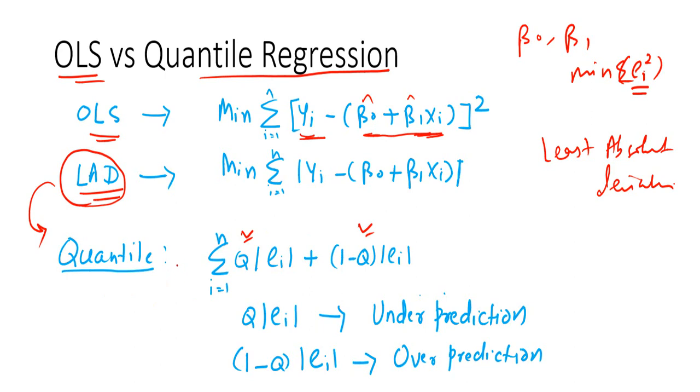The idea in quantile regression is not to find the conditional mean of the dependent variable, it is the conditional quantile. The penalty factor penalizes for under prediction and it also penalizes for over prediction. So that it stabilizes for that particular quantile.